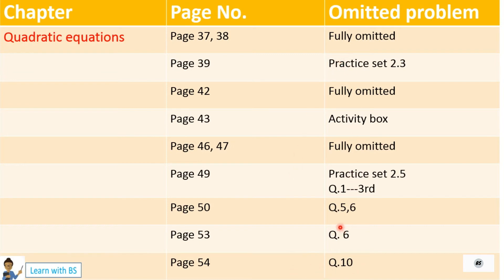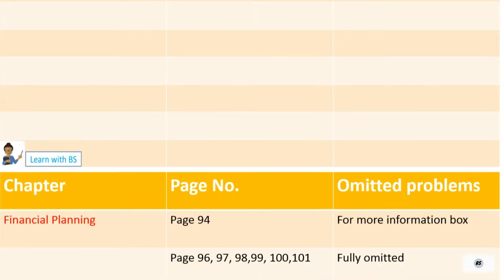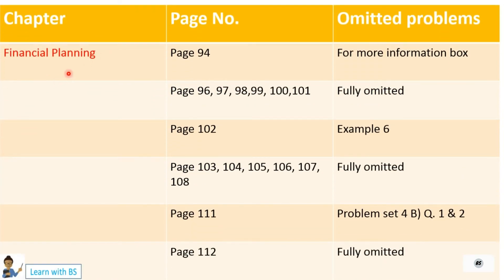So these are all the sums omitted from the chapter Quadratic Equations. Then comes the next chapter: Arithmetic Progression. This chapter you have to do completely — no omission, nothing is omitted, nothing has been cut off. The entire chapter you have to do.